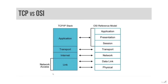The network access layer of the TCP/IP model combines Layer 1 and Layer 2 of the OSI model. It describes Layer 1 issues such as energy, bits, and the medium used to carry them — copper, fiber, wireless, etc. It also describes Layer 2 issues, like converting bits into protocol units such as Ethernet frames, MAC addresses, and network interface cards.